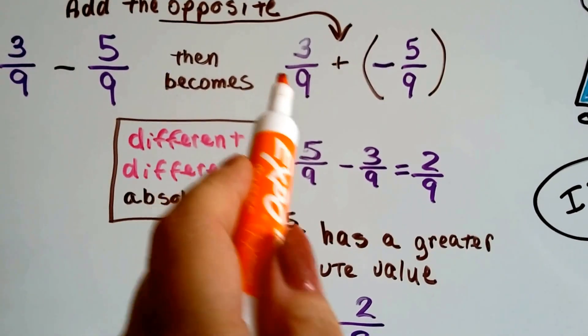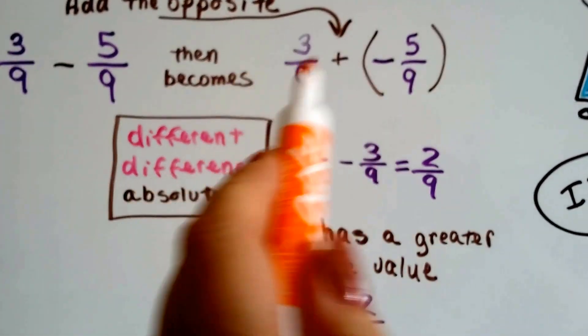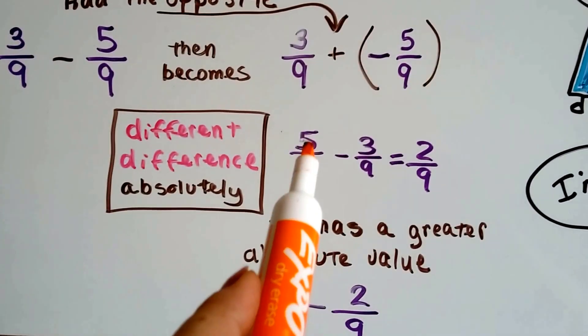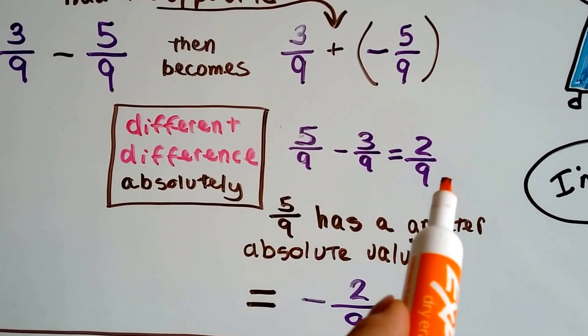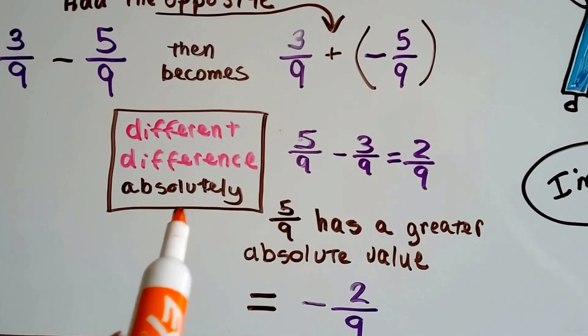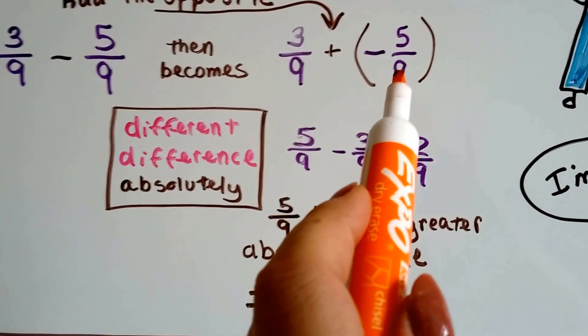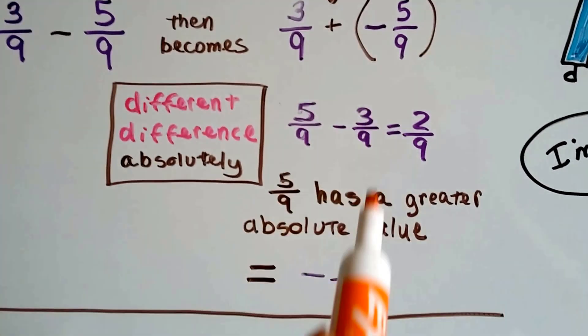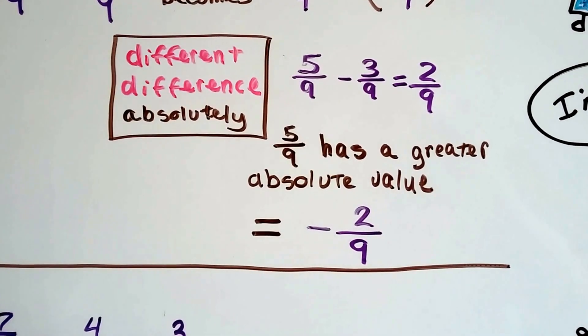They have different signs, a positive and a negative. So we find the difference. The difference between 5 ninths and 3 ninths is 2 ninths. And we use the absolute value of the larger and that would be 5 ninths. So it's a negative. So we have negative 2 ninths.